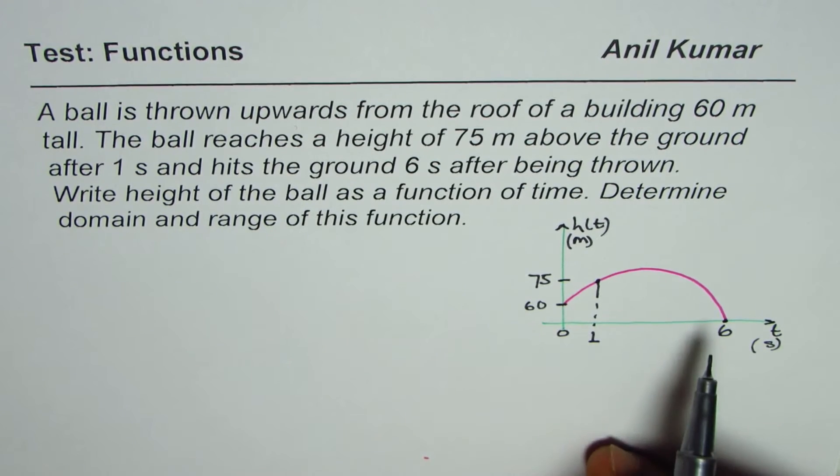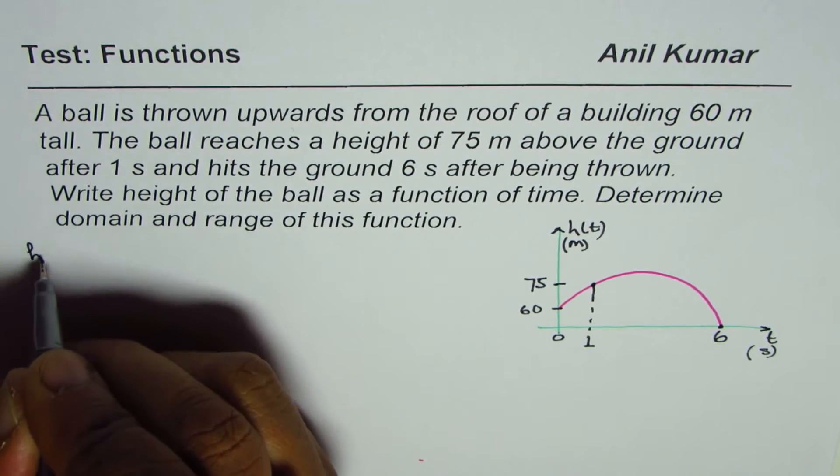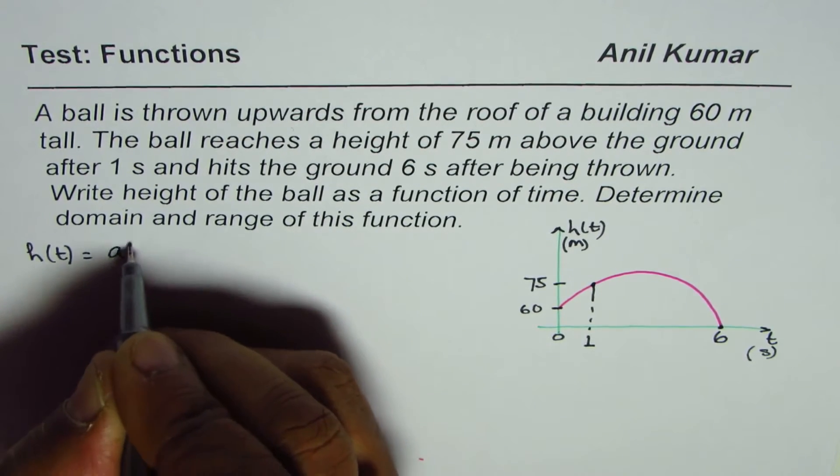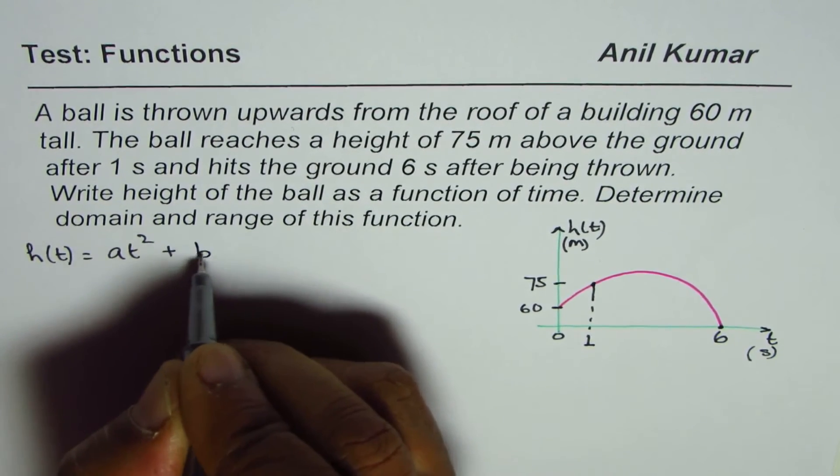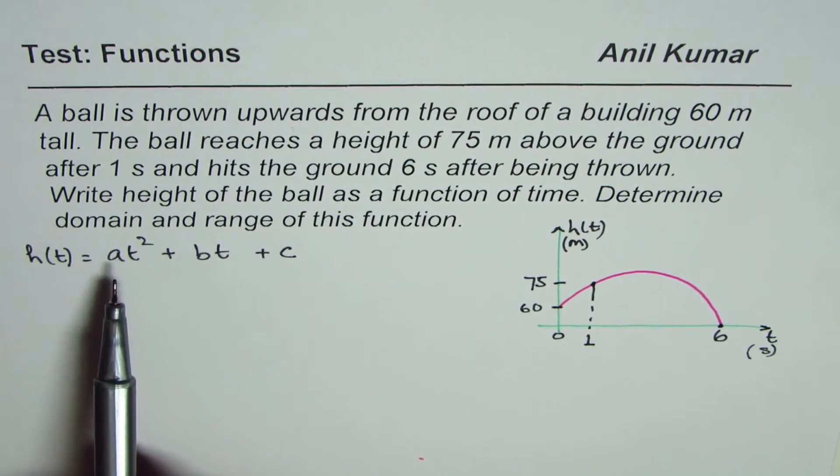So obviously this function has to be a quadratic function. We can write the function as h of t equals to a t square plus bt plus c. Now to find the values of a, b, and c we can use these three points.